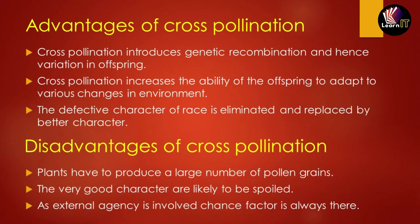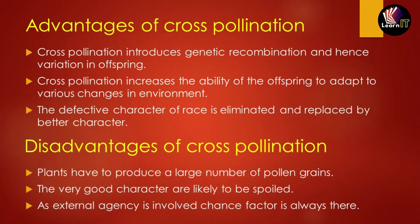The disadvantages of cross-pollination are: plants have to produce a large number of pollen grains because they are being transferred from one place to another, and some pollen grains may be dispersed in the wrong area. Good characters are also likely to be spoiled. Additionally, an external agency is always required, so there is always a chance factor involved in fertilization.